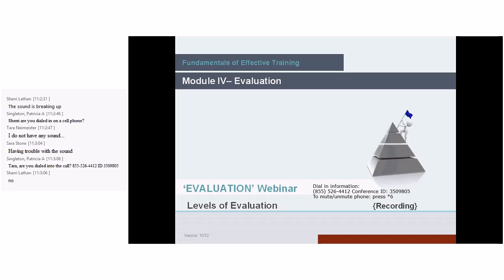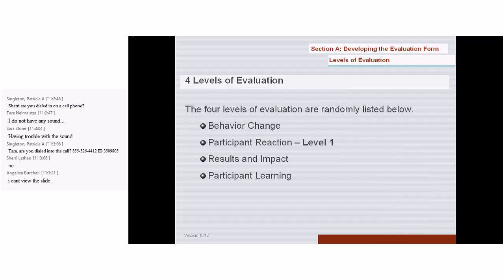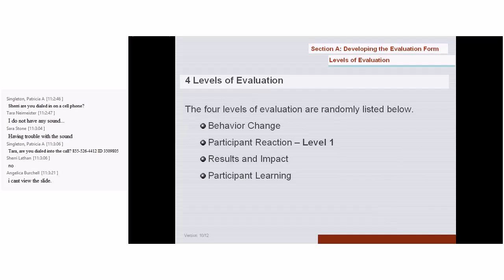What questions or comments do you have regarding anything that we've talked about so far? All right, let's move on then. The four levels of evaluation are randomly listed on the screen. In reality, there is a specific order for them that goes from level one to level four.